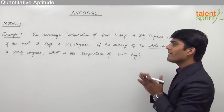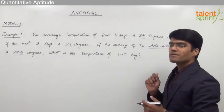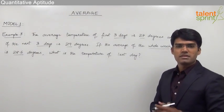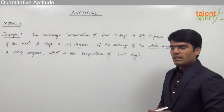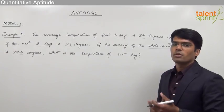So here we can see the average temperature of first three days, the next three days, and the average of the whole week is given to us, and from that we are supposed to find out the temperature of the last day. Let us try to solve this question by balancing the sum of the temperatures of the whole week.